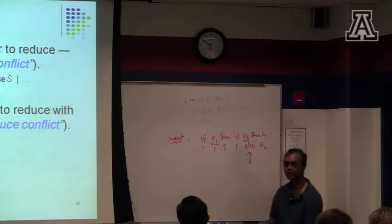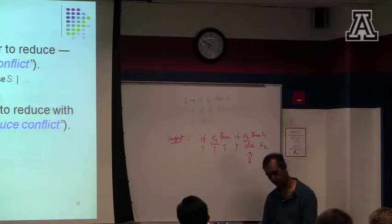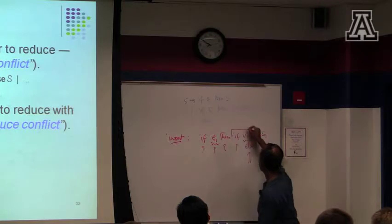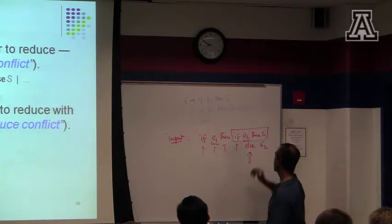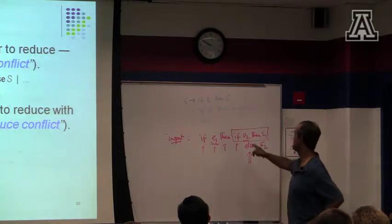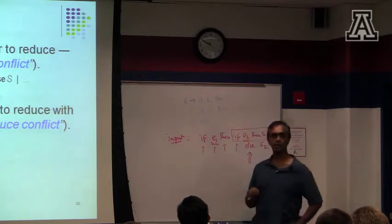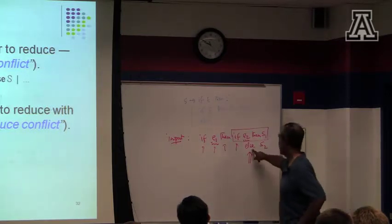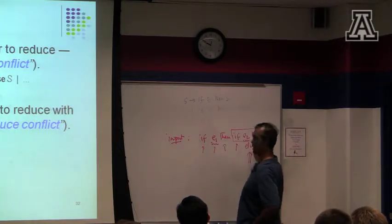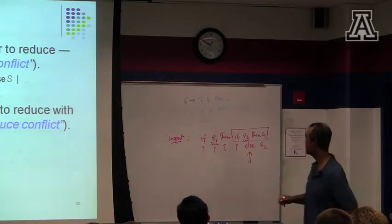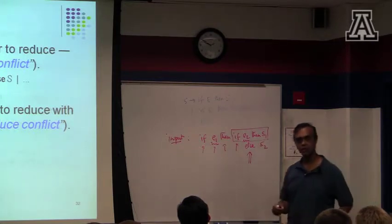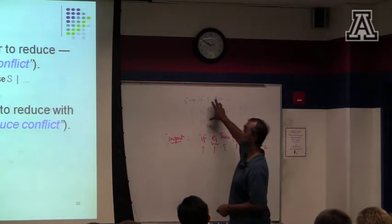Now the question is, what do I do with this else? I could take what's already on the stack and say, hey, that matches the right-hand side of this production, so I should reduce this part to a statement. And this else can then be matched over here, because I have if, E, then, S, else, S2. So that's one possible way to proceed — as soon as I see the else, I reduce.